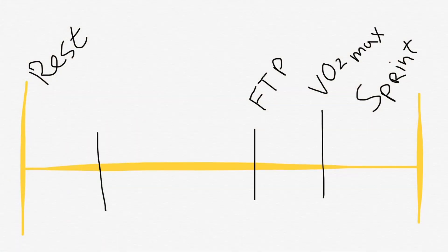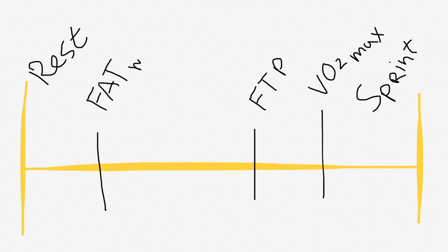For instance, fat max — the intensity at which you burn the most fat. This is a good intensity to train your endurance engine and to lose weight. Fat max is also the intensity at which you recover the fastest from previous intervals.